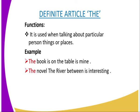So in this sentence, you can see that the book is an item which is being identified specifically. Another example: 'The novel The River Between is interesting.' This tends to talk about a particular book, which is The River Between.